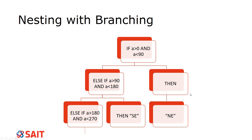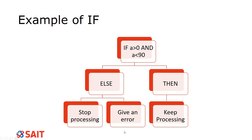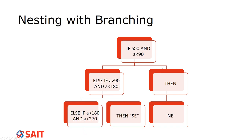Branching is relatively straightforward with if and then. The visualization shows the else-if statement — if it were just else, it simply ends at that point. Don't take the symbols shown here as final — real flowchart symbols will be shown in a moment. With nesting and branching, we have else-if, meaning we make another decision and combine that into one statement that works together.